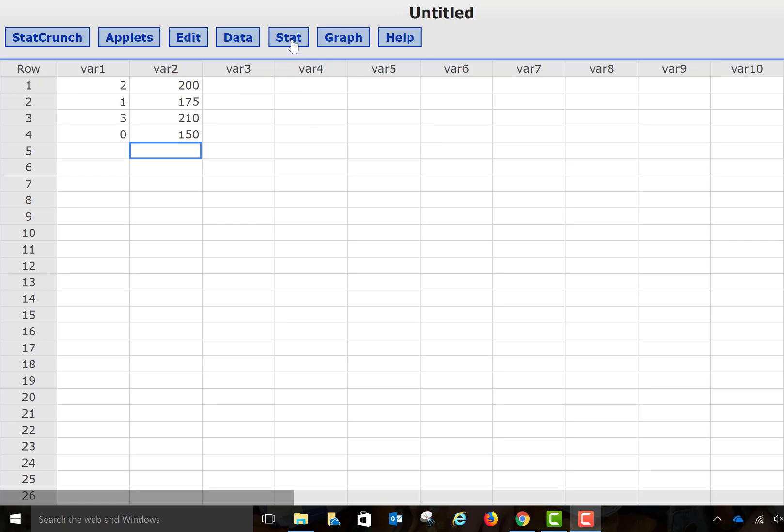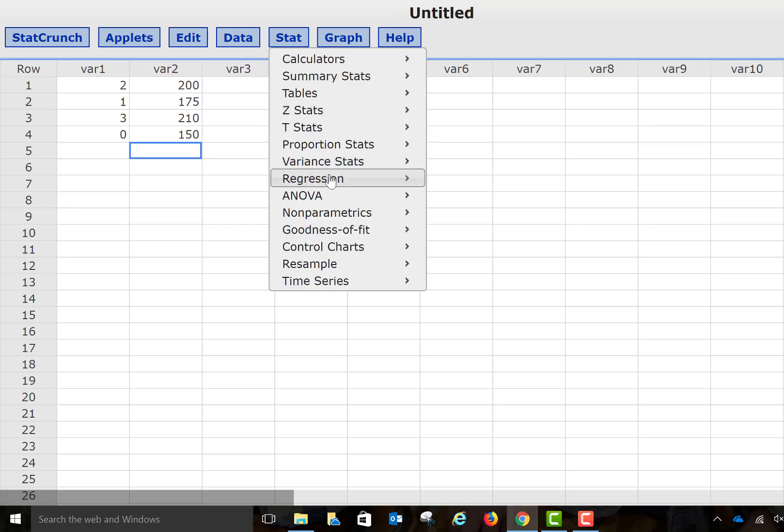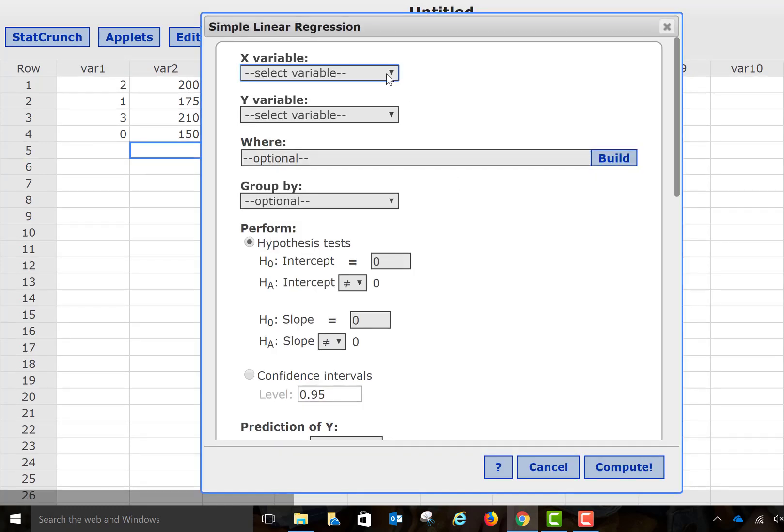In order to do that, we need to go to the stat menu. We're going to come down here to regression, and we are only working with simple linear regression. It's going to bring this menu up. I need to select my x variables, which for mine I had my x variables in the column titled variable 1, and then my y variables I'm going to have in variable 2. Now when I do compute...